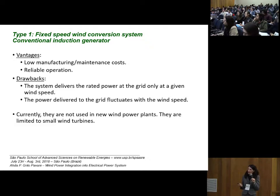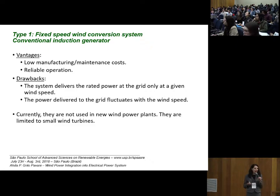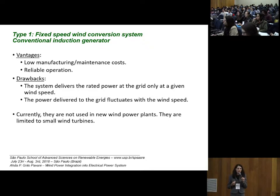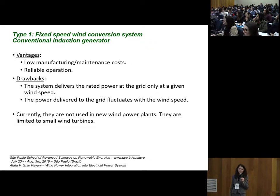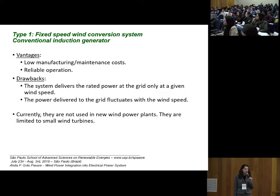The advantages of fixed speed wind conversion systems are low manufacturing and maintenance costs and reliable operation. The drawback is that the system delivers rated power to the grid only at one specific wind speed, and the power delivered fluctuates with wind speed — a significant problem for power systems. Currently, the use of this configuration is limited to small or medium-sized wind turbines.